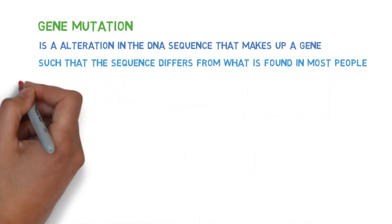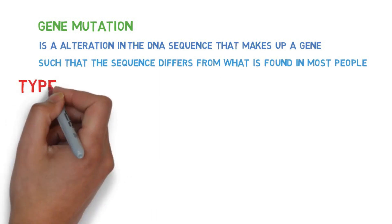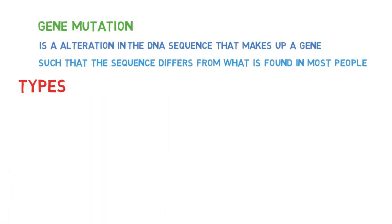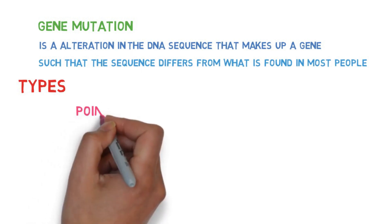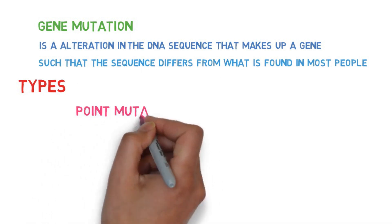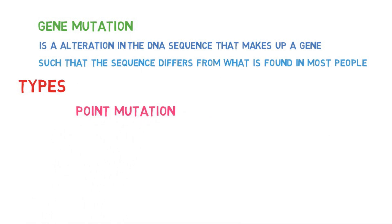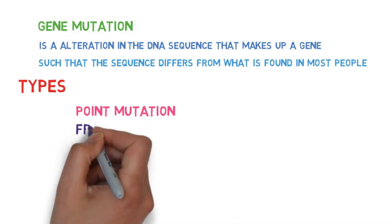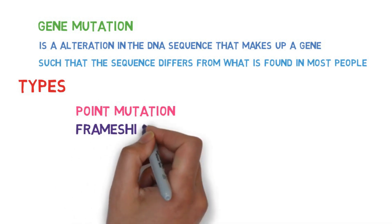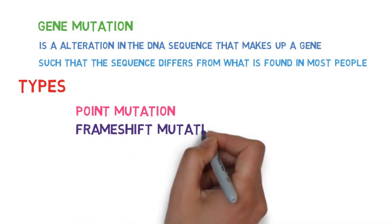Now we see the types of gene mutation. There are two types of gene mutation: first, point mutation, and second, frameshift mutation.